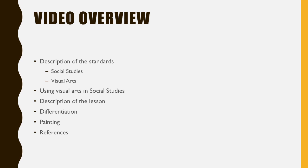So the video overview: we're going to go over the social studies standards for this lesson, then the visual arts standards. Then we're going to talk about using the visual arts in social studies and what that looks like. I'm going to give you a description of the lesson, and then talk about some ways to differentiate using the visual arts in social studies. And then I have a painting example and then references.